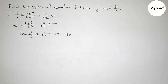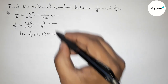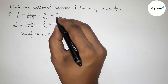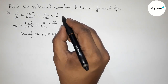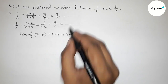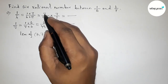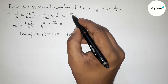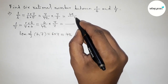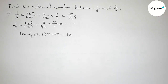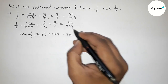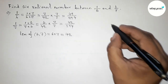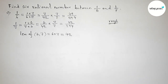Now to find 6 rational numbers, we have to multiply both rational numbers by a number. Taking 7 in numerator and denominator for both. So 7 by 42 multiplied by 7 up and down gives 49 by 294, and 6 by 42 multiplied by 7 up and down gives 42 by 294.